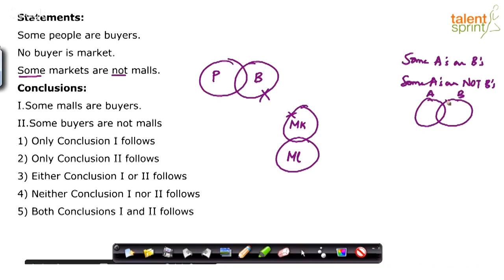The difference is: for 'some A are B' we refer to the overlapping shaded region, and for 'some A are not B' we refer to the external region of A which is not overlapped with B. So when we say 'some markets are not malls', we are talking about those outside markets — the markets that are not malls.